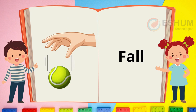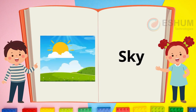Fall. In the picture you see the ball falling from the hand. Fruits and leaves fall from trees. What falls from the sky? Sky. The sun and clouds are in the sky. Half of the sun is behind a cloud. What's in the sky at night?